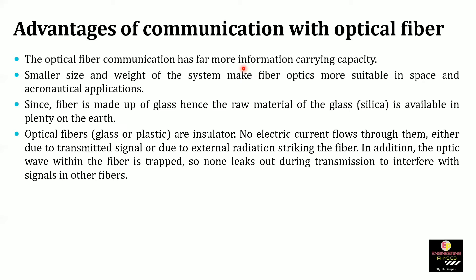Glass or plastic material used in optical fiber is an insulator material. Optical fiber cannot pass current through it, whether due to transmitted signals or due to external radiation striking the fibers. In addition, the optical wave within the fiber is trapped, so none leaks out during transmission to interfere with signals in other fibers. Light propagates in the core of the optical fiber, so leakage is very low.